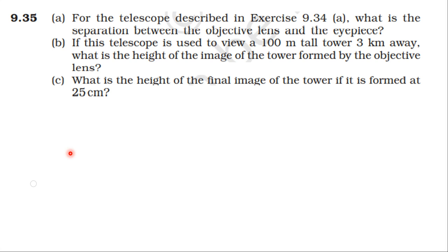Now part 9.35. For the telescope described in exercise 9.34, what is the separation between the objective lens and the eyepiece? When the final image is formed at infinity, the distance between objective lens and eye lens is f0 plus fe, that is equal to 140 plus 5, so 145 centimeters. Distance between objective lens and eye lens is 145 centimeters.